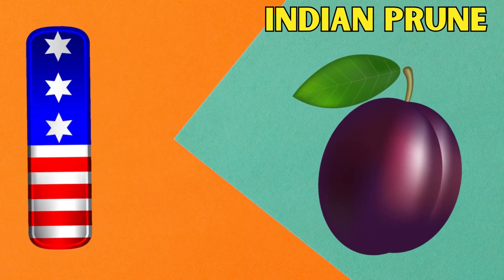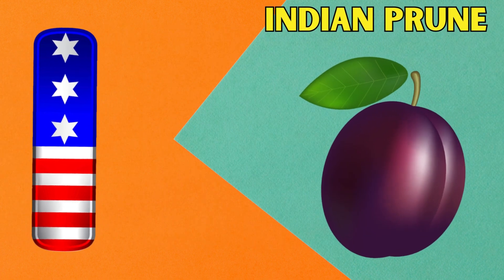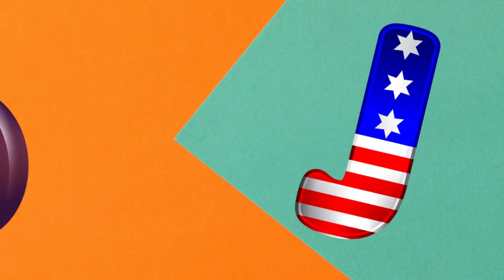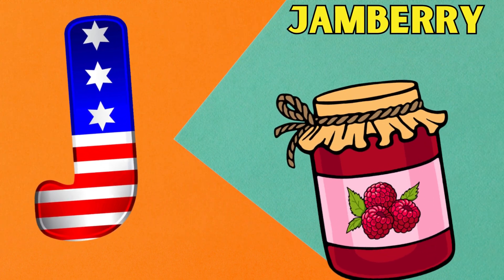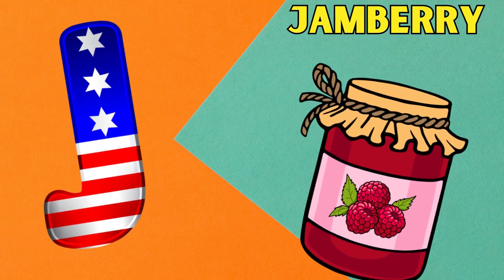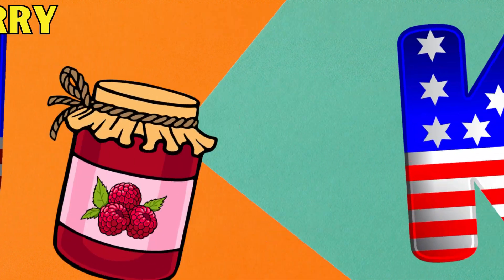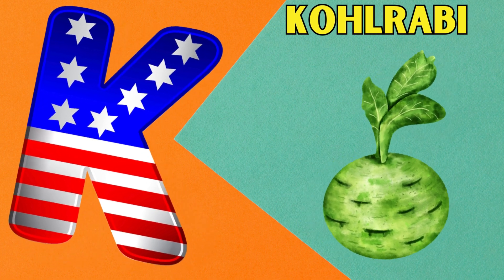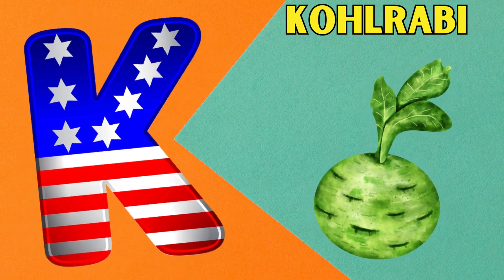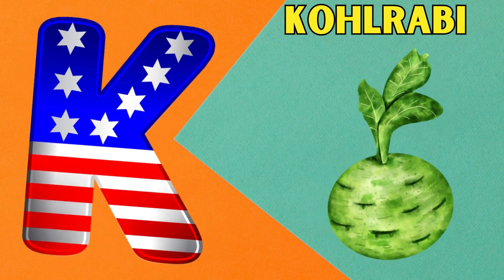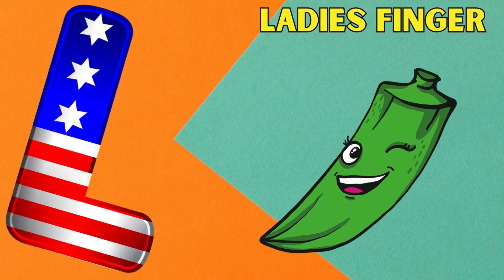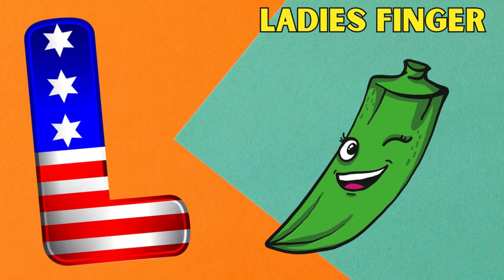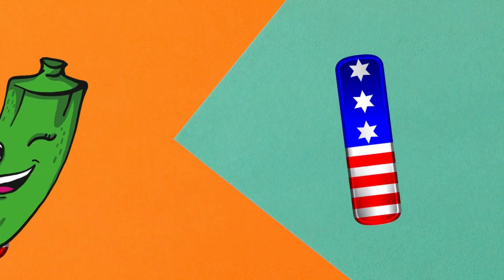I is for Indian prune. J is for jamberry — juh, jamberry. K is for kohlrabi — kuh, kohlrabi. L is for lady's finger — luh, lady's finger.